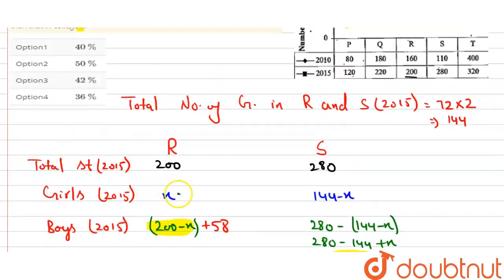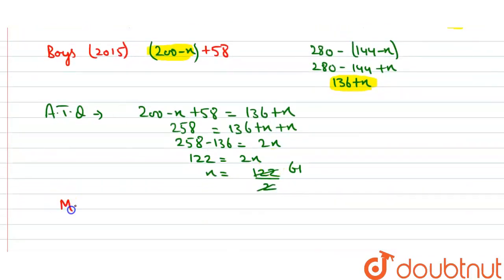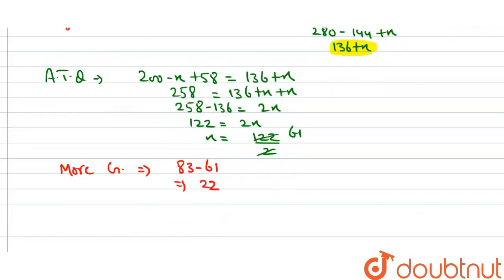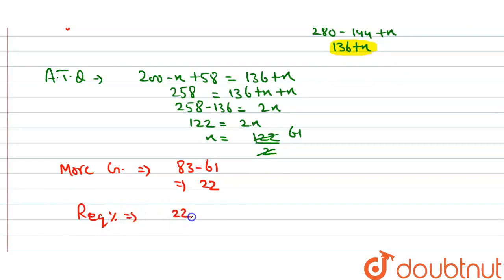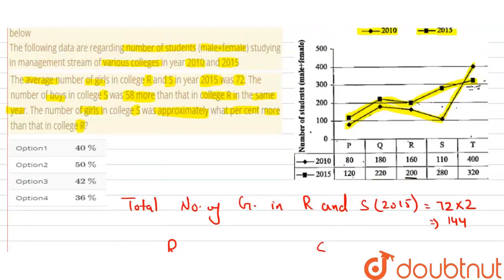So girls in college R = 61 and girls in college S = 144 − 61 = 83. More girls in S than R = 83 − 61 = 22. Required percentage = (22 / 61) × 100 = 2200 / 61 ≈ 36.06%, which is approximately 36%. So the answer is 36%, which is option 4. Thank you.